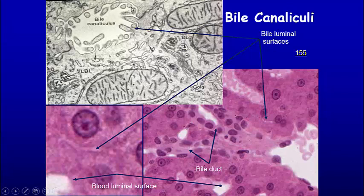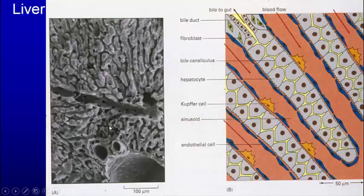This is the bile canaliculus, and we see tight junctions from adjacent cells to allow this lumen to occur. Microvilli project into it. This is how the bile goes through. The blood is in the sinuses, but the bile is in the bile canaliculus. It goes between the different cells and then finally goes into the bile duct, which has cuboidal cells. The first compartment of the pathway is the bile canaliculus — it's just a space between adjacent hepatocytes. The blood comes through the sinus and the bile goes the other way.